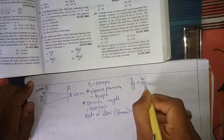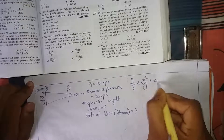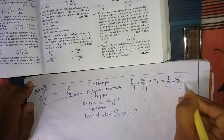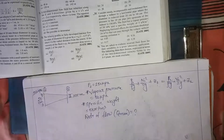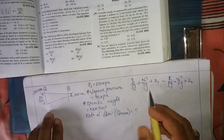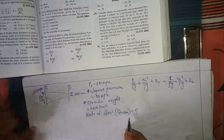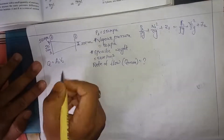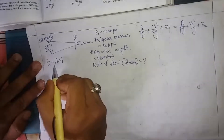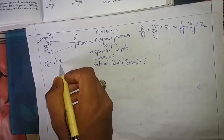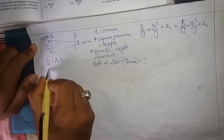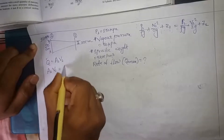Applying Bernoulli's equation: P1/ρg + v1²/2g + z1 = P2/ρg + v2²/2g + z2. We don't know v1, v2, or Q directly, so we use the continuity equation: A1·v1 = A2·v2.